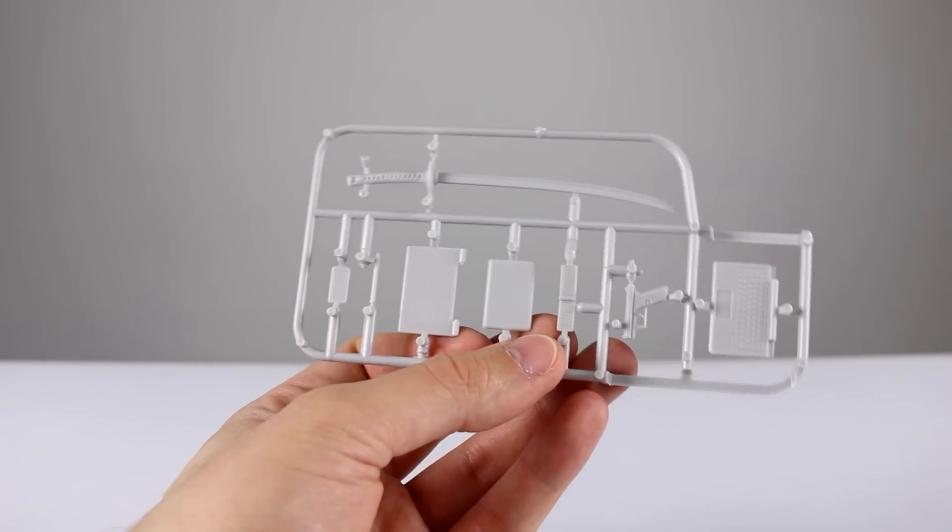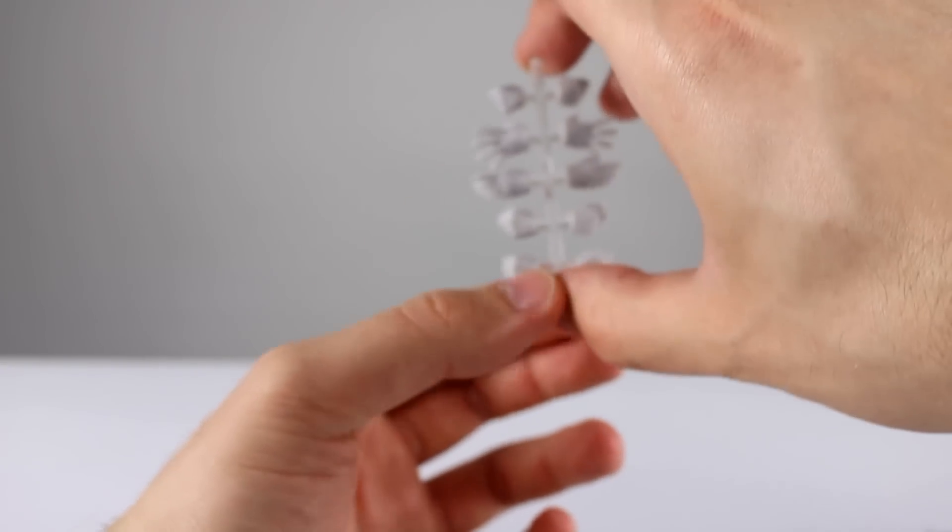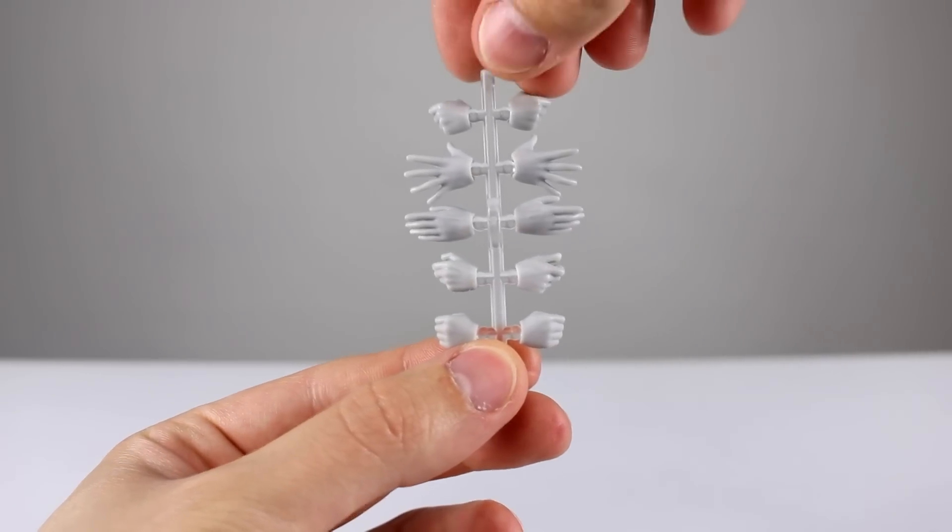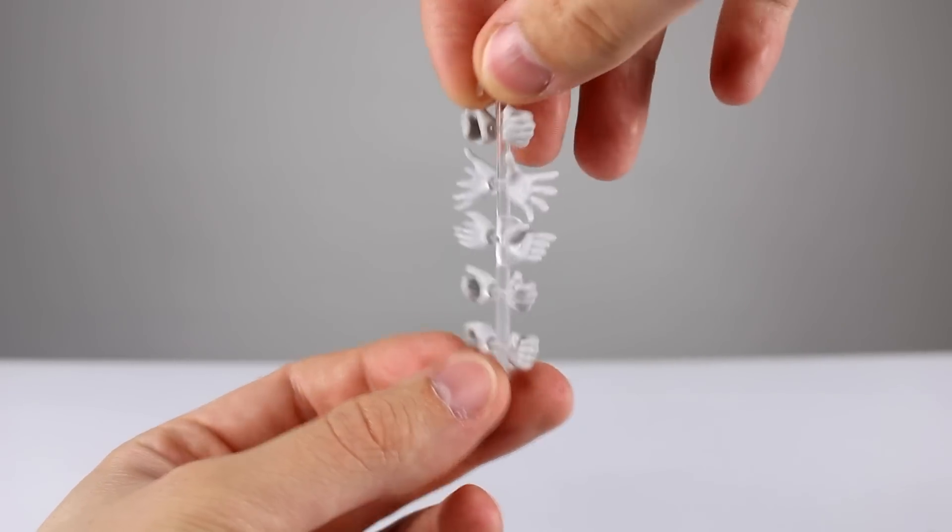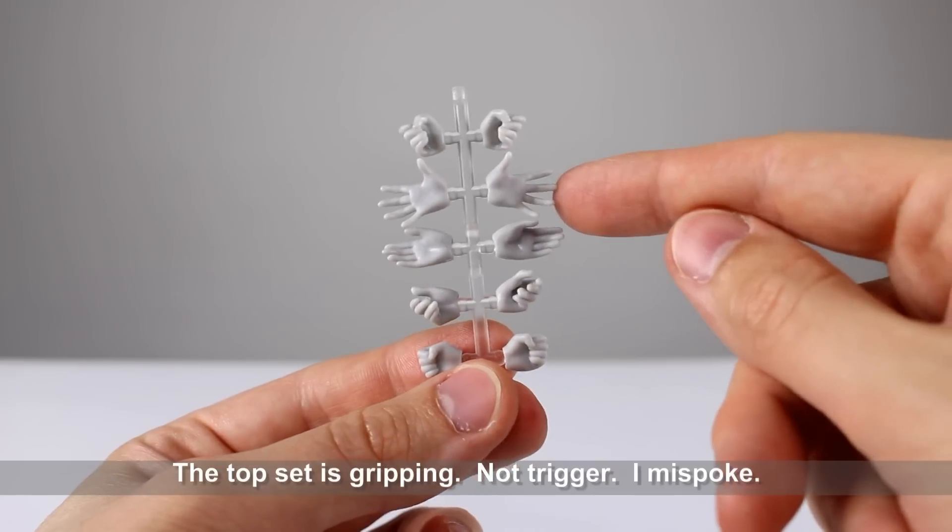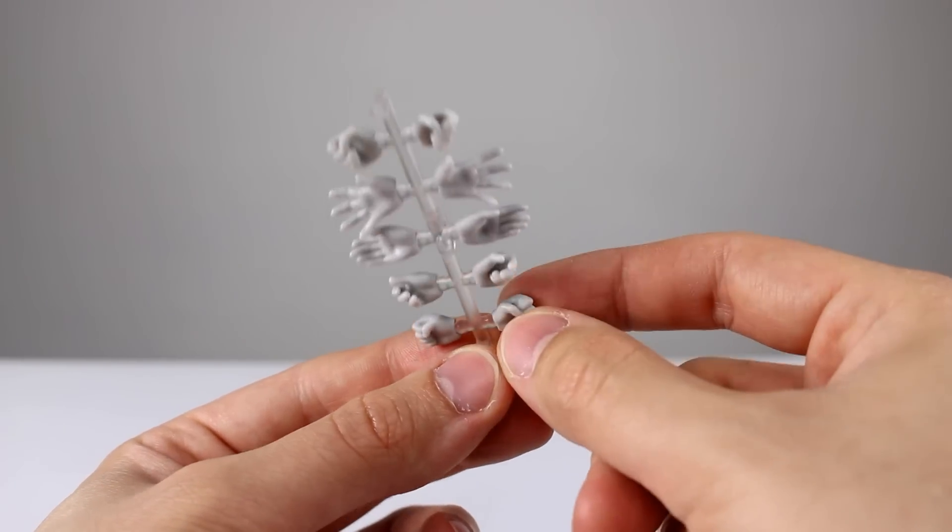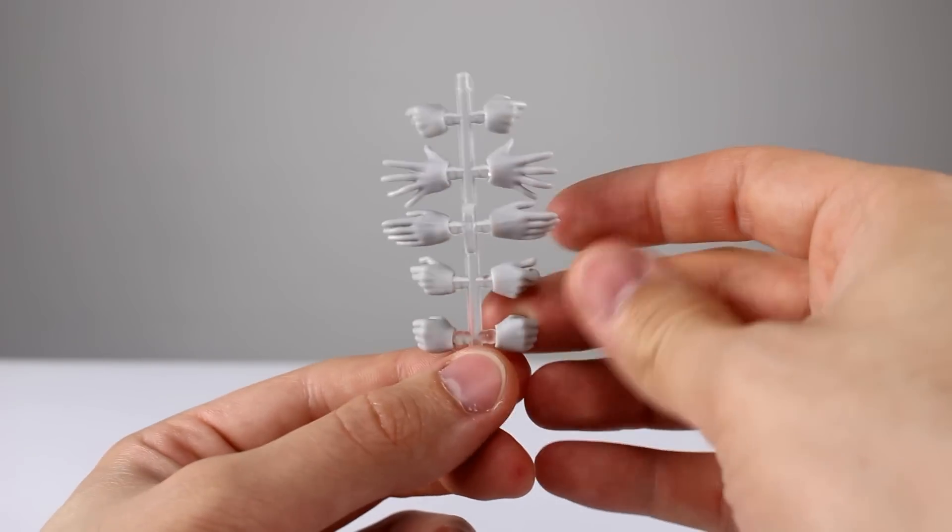We have that, then we also have a ton of different hands and I'm just going to leave them on the trees because you'll be able to see them just as well that way. So the top set are trigger finger hands, then we have some style pose hands, some more style pose hands, some gripping hands for an angle, some fist hands, slightly different fist hands than the standard ones.